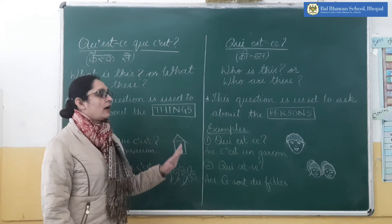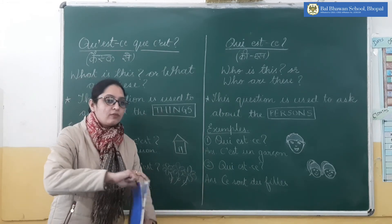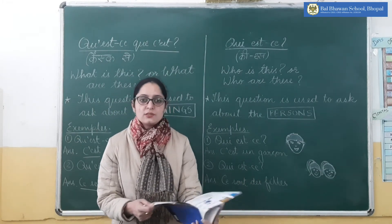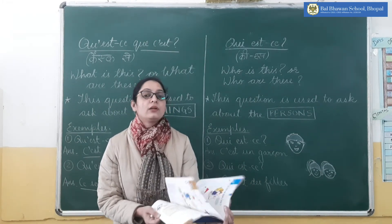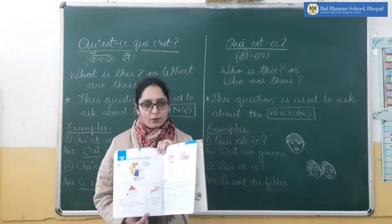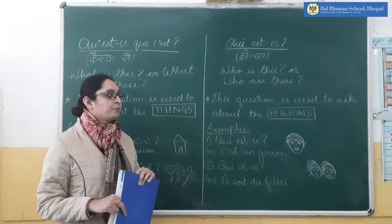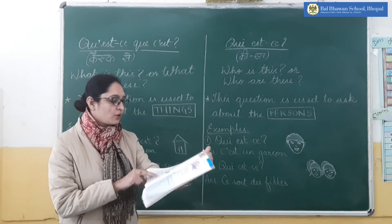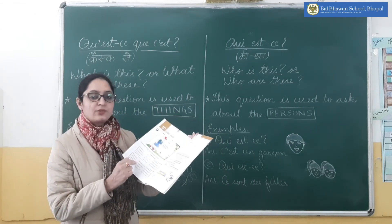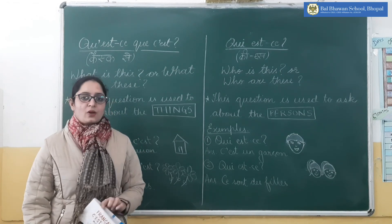In this chapter you are going to learn only these two questions and their answers. When we meet in the next Zoom class we will do some exercises related to these two questions and we will read all the questions given in your book. You can revise using your book, page number 60 and page number 63. That's it for today. Au revoir. Merci.